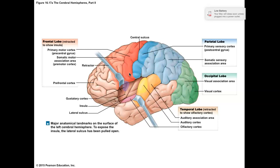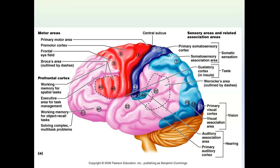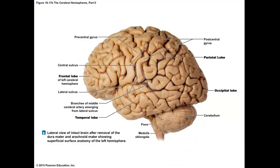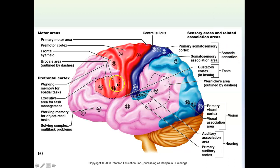Broca's area is found within the frontal lobe and is the area responsible for making speech physically possible — not understanding speech or forming sentences, but the motor commands to your tongue and mouth. If you had a stroke damaging this region, you would be able to understand someone, read, and formulate sentences in your mind, but you would not be able to physically say them.